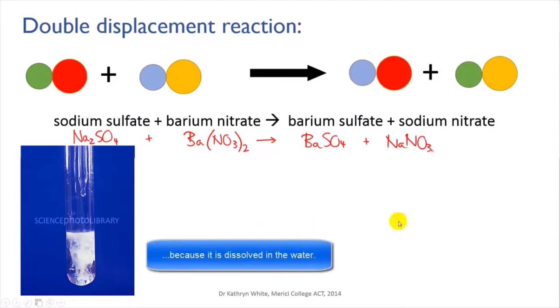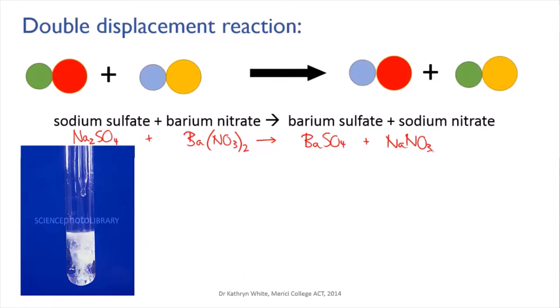Here's a quick task for you. Using what you know about separations, work out a way that you could recover the two products of this reaction — barium sulfate and sodium nitrate — in their pure solid form.